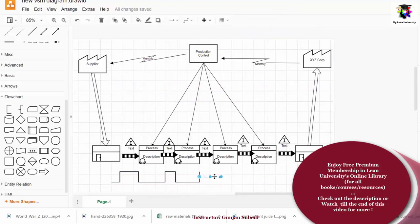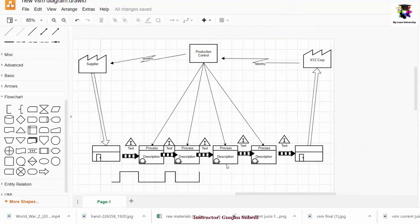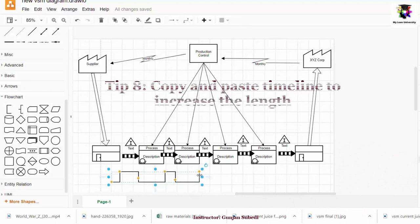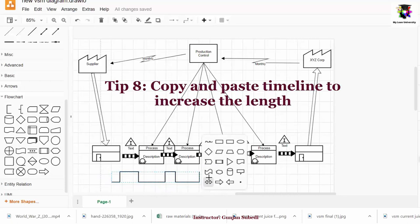Again, the next tip, the length of this timeline is shorter. So if we want to increase the length, what you do is, you go and click on the timeline. You then click the blue arrow symbol over here. When you click that, you again see one more timeline.